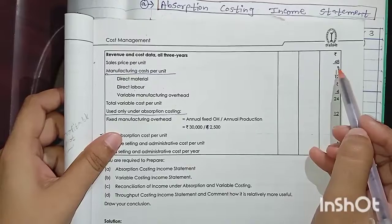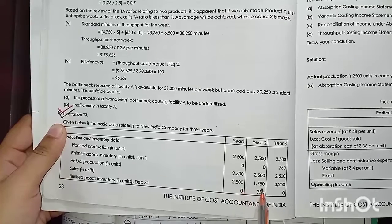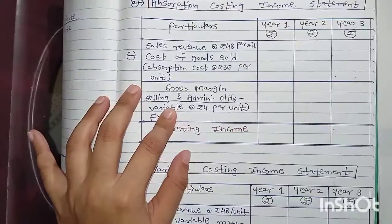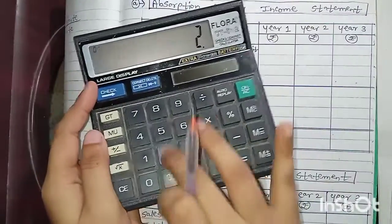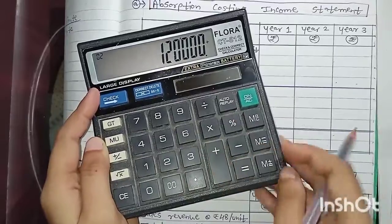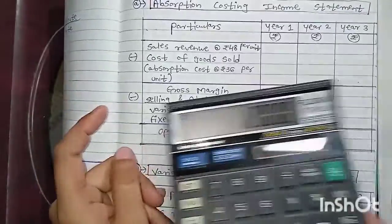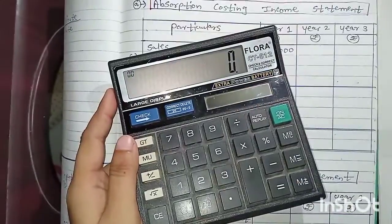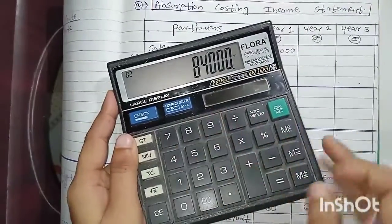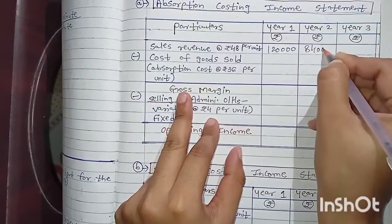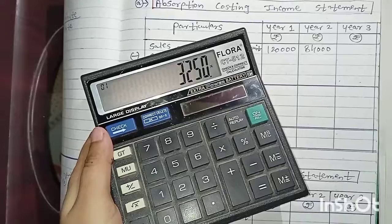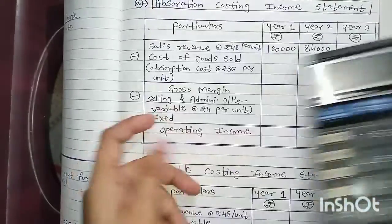First we calculate sales. Selling price per unit is ₹48 and sales units are 2,500 / 1,750 / 3,250. Year 1: 2,500 × ₹48 = ₹1,20,000. Year 2: 1,750 × ₹48 = ₹84,000. Year 3: 3,250 × ₹48 = ₹1,56,000.